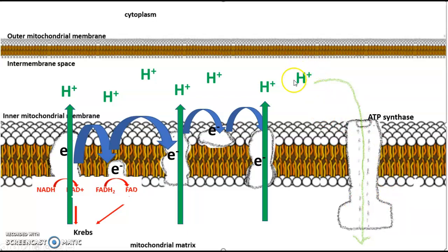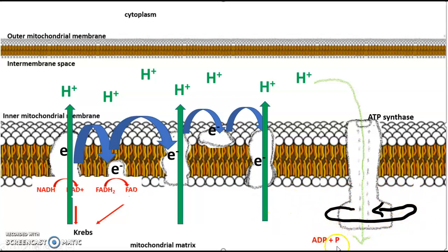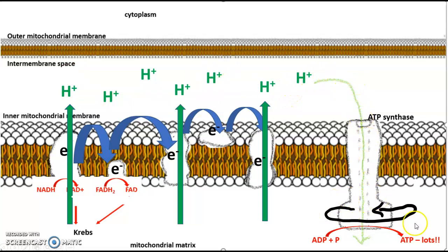This is a form of facilitated transport because hydrogen is going from high to low concentration through a transport protein. When the hydrogens go through ATP synthase, it actually makes ATP synthase spin. This spinning — this energy of motion — allows a phosphate to be added to ADP to make ATP. Every hydrogen that goes through ATP synthase allows for a lot of ATP to be made. This is how the electrons from glucose are used to put the phosphate back on ADP to make ATP.